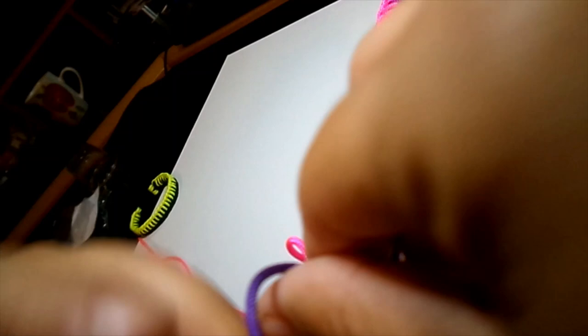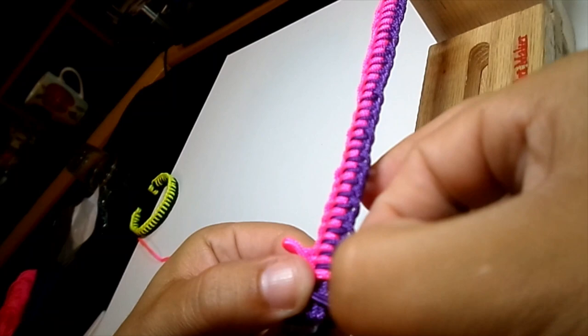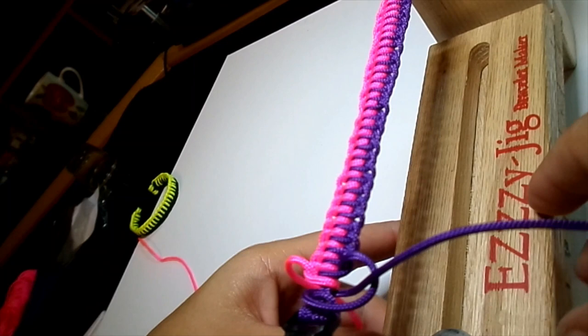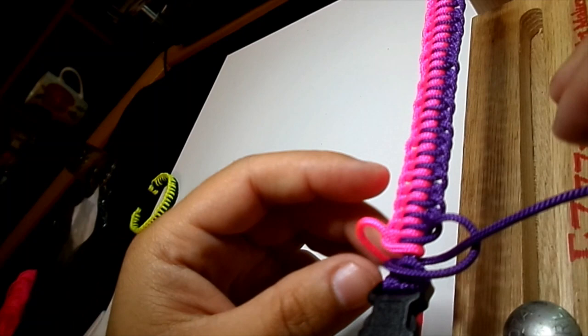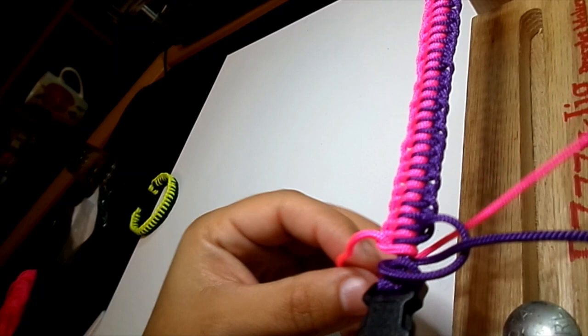So I think I can get about one more in there. Now there's a couple of different ways I've seen people finish these off. Some people do a Solomon knot at the bottom. I kind of don't like it because it messes up the pattern, so I was playing with this and what I found that I like is...